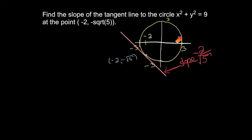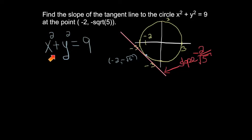Now we're going to do the same problem a second time using a new method called implicit differentiation. We do not solve for y in terms of x as the first step — we keep the function in the implicit form. This method will be very helpful if we couldn't solve for y in terms of x.